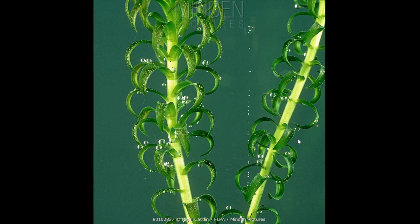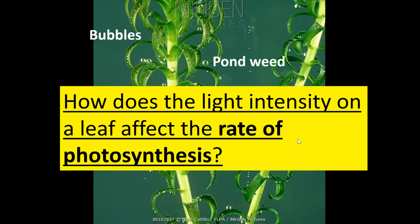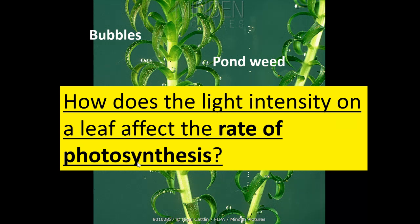Instead of measuring the volume of bubbles, we're going to be counting how many bubbles we see. So back to the driving question — how does the light intensity on a leaf affect the rate of photosynthesis? The rate of photosynthesis can be measured by counting the number of bubbles produced, and we'll do how many bubbles we see per minute.